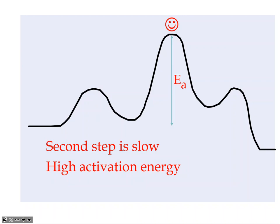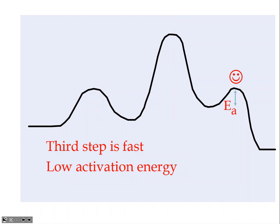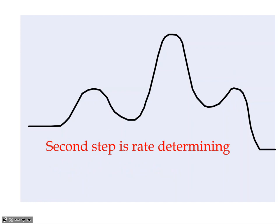The second step is the rate-determining step — it has the highest activation energy of all three hills. So the middle step is the rate-determining step for this mechanism. The last step, with a slight hill, is also going to be considered fast because it doesn't have the highest activation energy. The second step is the rate-determining or slow step because it has the highest activation energy of all three.